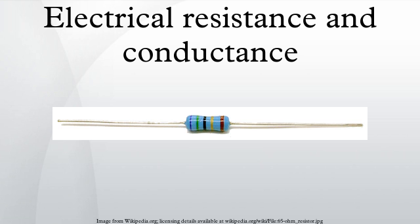Strain dependence: Just as the resistance of a conductor depends upon temperature, the resistance of a conductor depends upon strain. By placing a conductor under tension, the length of the section of conductor under tension increases and its cross-sectional area decreases. Both these effects contribute to increasing the resistance of the strained section of conductor. Under compression, the resistance of the strained section of conductor decreases. See the discussion on strain gauges for details about devices constructed to take advantage of this effect.